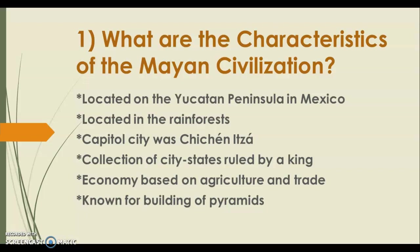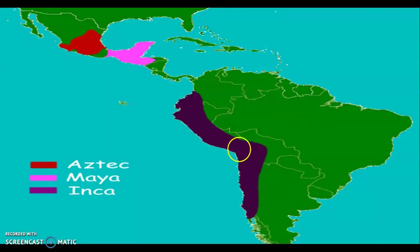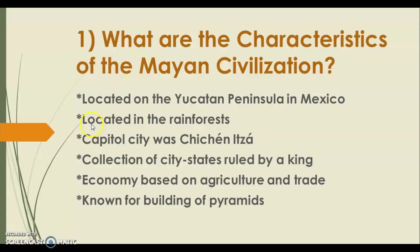What are the characteristics of the Mayan civilization? They were located on the Yucatan Peninsula, which is the southern tip of Mexico. They were located in rainforests. On the SOL, they're going to ask you about the geographic features of each of the Native American empires, and you have to know that the Mayans lived in tropical rainforests.